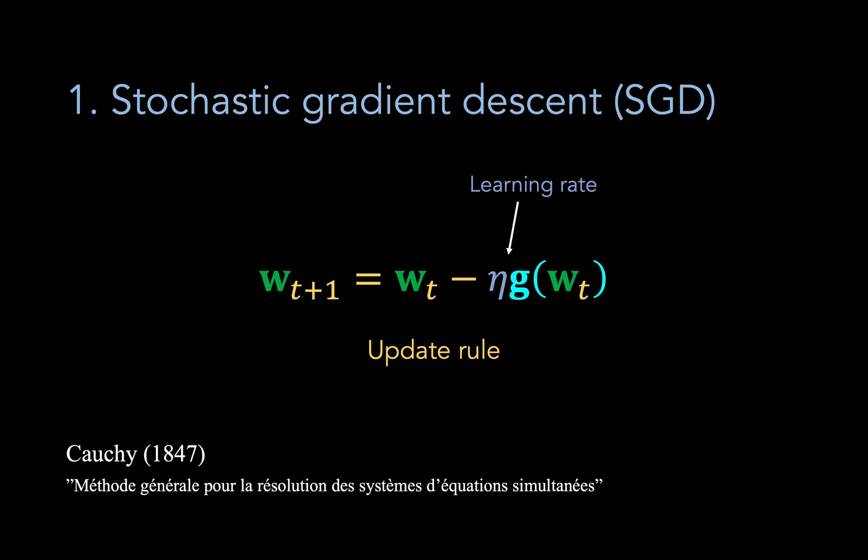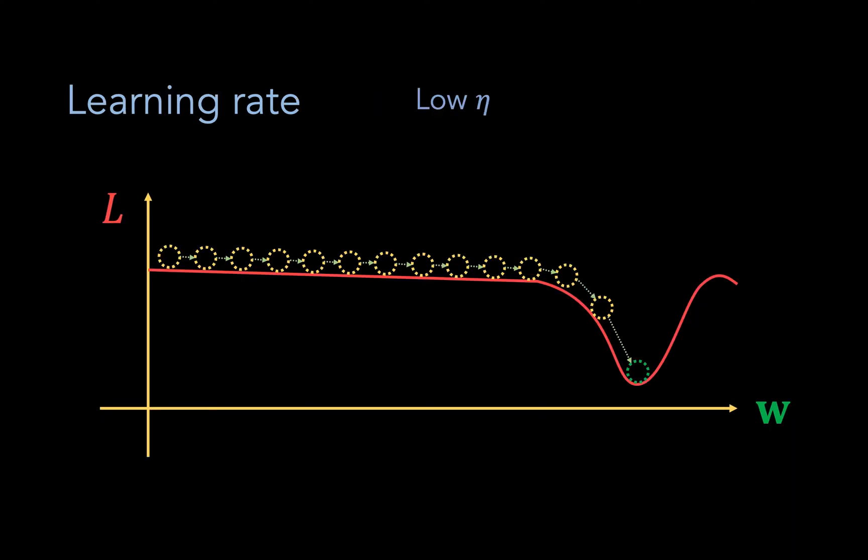Now, the learning rate is an extremely important hyperparameter in stochastic gradient descent. It has to be manually set before training begins, and its particular value can significantly affect the trajectory taken by w in parameter space. With a learning rate that is very low, it can take a large number of time steps before training is finished. And another drawback is that weights may get stuck in local minima that are suboptimal compared to the global minimum. So there are a few drawbacks to having a low learning rate.